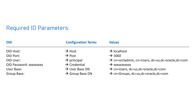The third parameter is the Principal. This is the complete username of the admin account in your OID — similar to how you have an admin user in WebLogic. The default admin user in OID is 'orcladmin'. The username is specified in DN format: 'cn=orcladmin,cn=users,dc=us,dc=oracle,dc=com'. This is the format in which user entries are stored in OID.